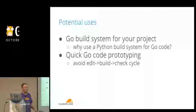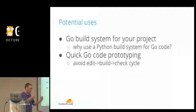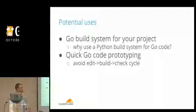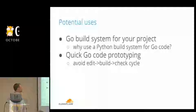Quick Go code prototyping is another use case. Many of us have an idea, jump into the terminal, start coding, then see a flaw in the logic. You write code, compile it, run it, see the flaw, go again, change your code, compile it — this iteration cycle. But if you can just plainly execute your .go files, you skip one step and can quickly prototype without all those manual compilation steps.